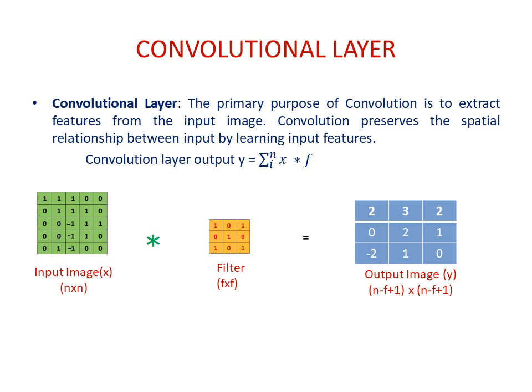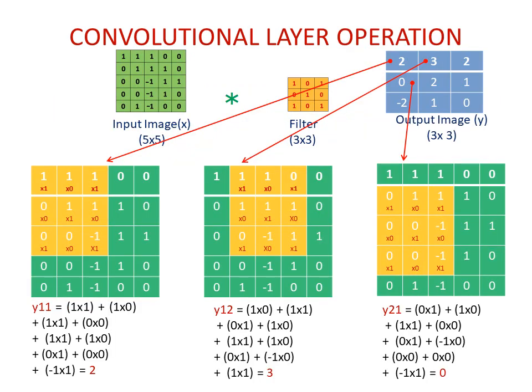Let me tell you how to calculate the 3×3 numbers in the output image — how this convolutional layer works. The input image sample I have chosen is 5×5 dimension, and the filter is 3×3 dimension. When the input image is convolved with this 3×3 filter, it produces an output image of 3×3 dimension. To find the (1,1) element of this output, we superimpose this filter onto the input image such that position (1,1) of the filter is superimposed on position (1,1) of the input image.